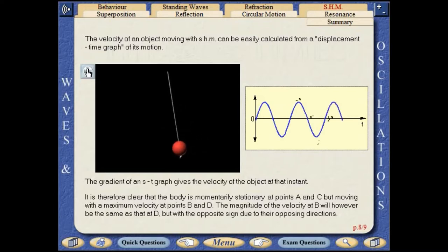It is therefore clear that the body is momentarily stationary at points A and C but moving with maximum velocity at points B and D.